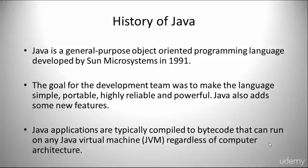The language was initially called Oak by James Gosling, one of the inventors of the language. Later, the project went by the name Green and was finally renamed Java from Java Coffee.